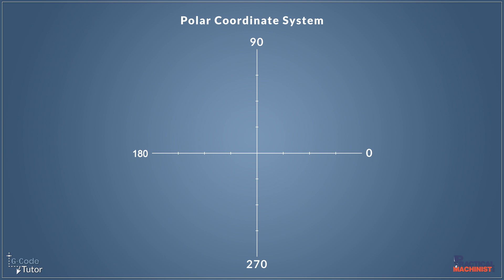When we are programming with polar coordinates, our graph looks a little different. Instead of axes, now we're looking at degrees. If we're going over to the left, which used to be X plus, we're now looking at zero degrees. If we're going straight up at Y plus, we're now looking at 90 degrees. And the center of this graph is the position of the tool, not the datum position of the component.